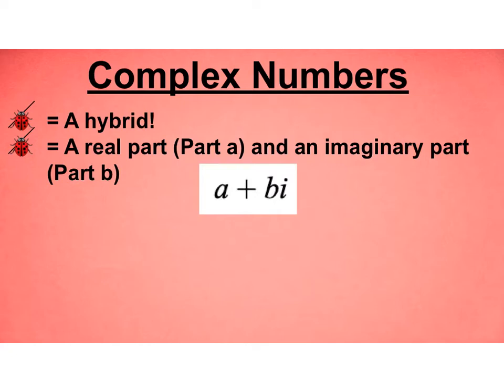So complex numbers, you can think of these as a hybrid. You have a real part, which is identified here as a, and then you have the imaginary part, which is bi. We want to think about that when we go through our operations, that there is a real part and an imaginary part.